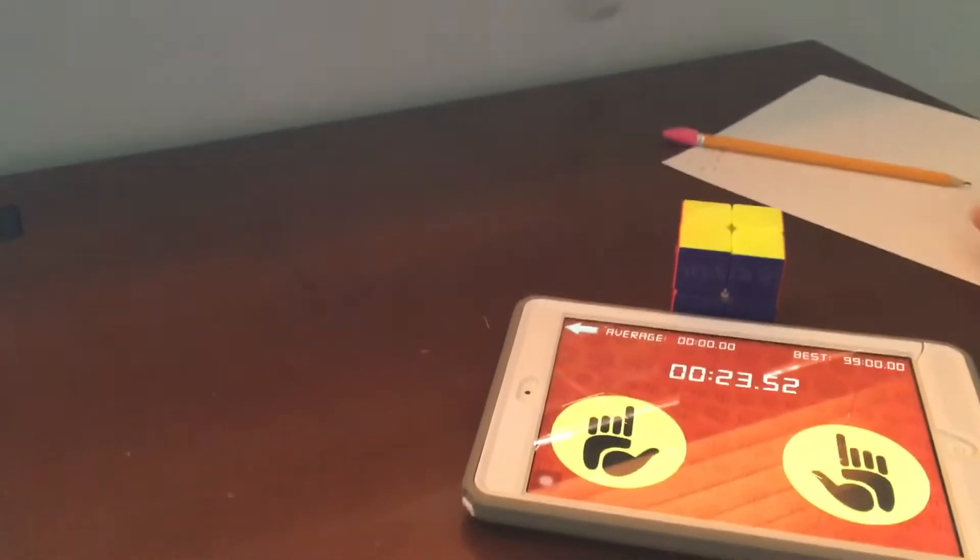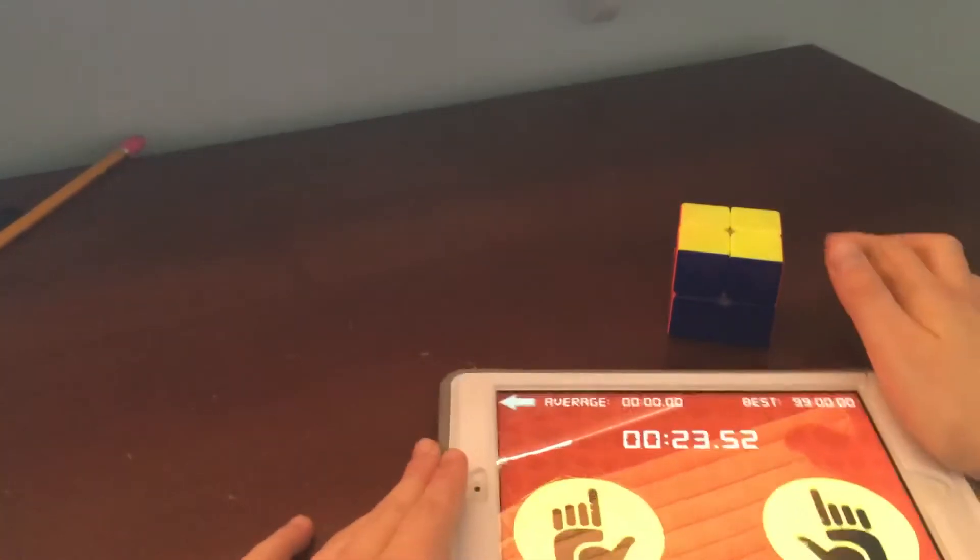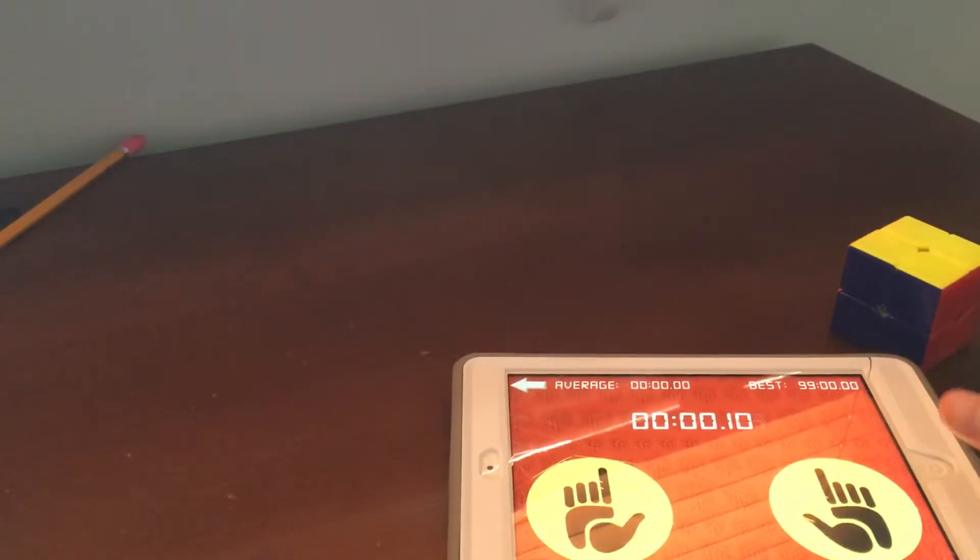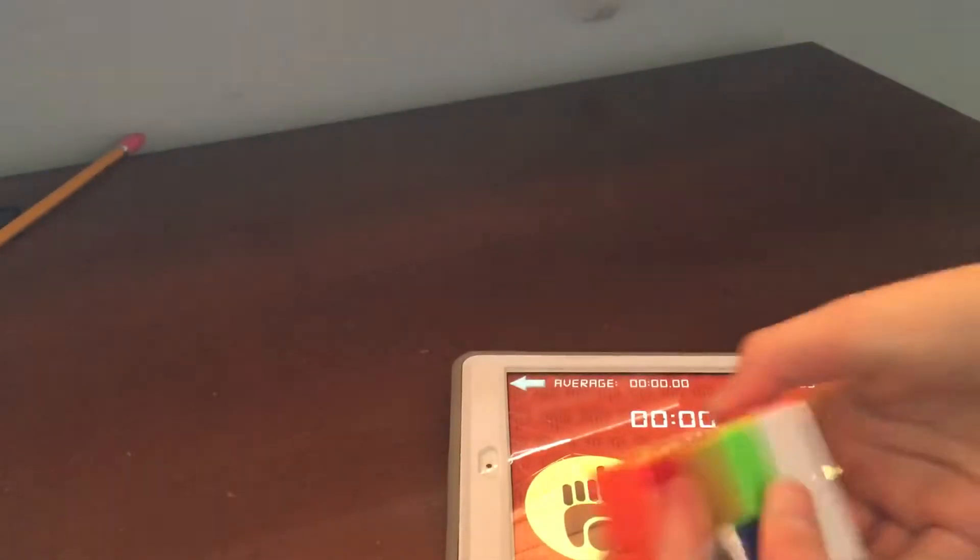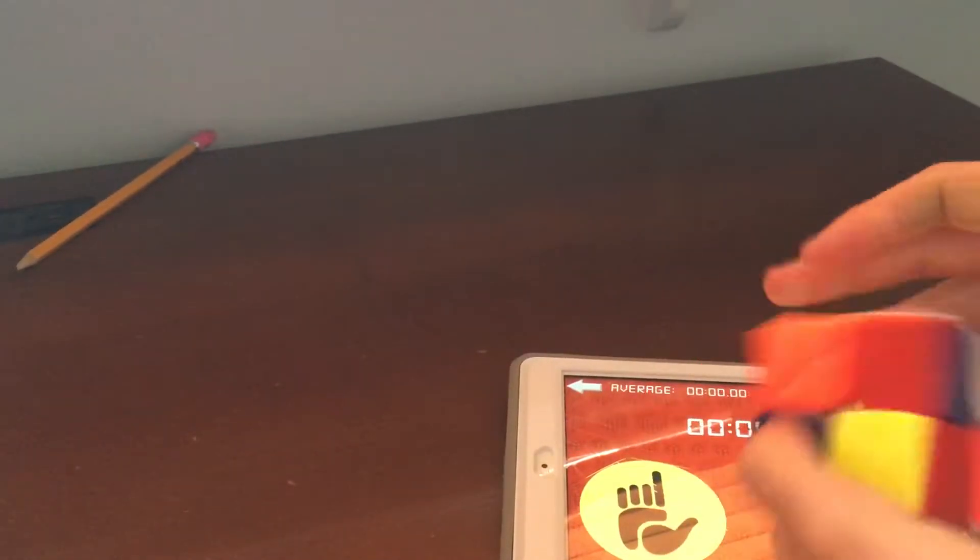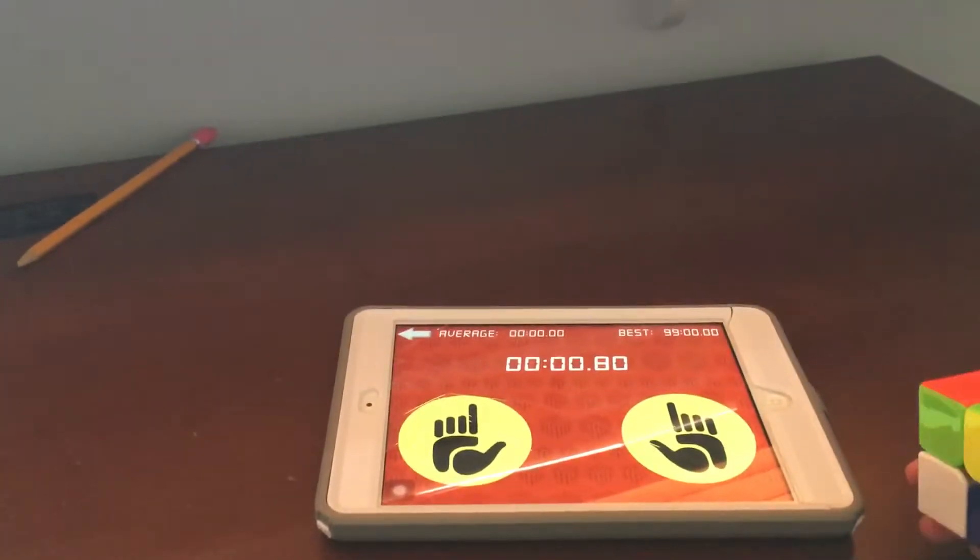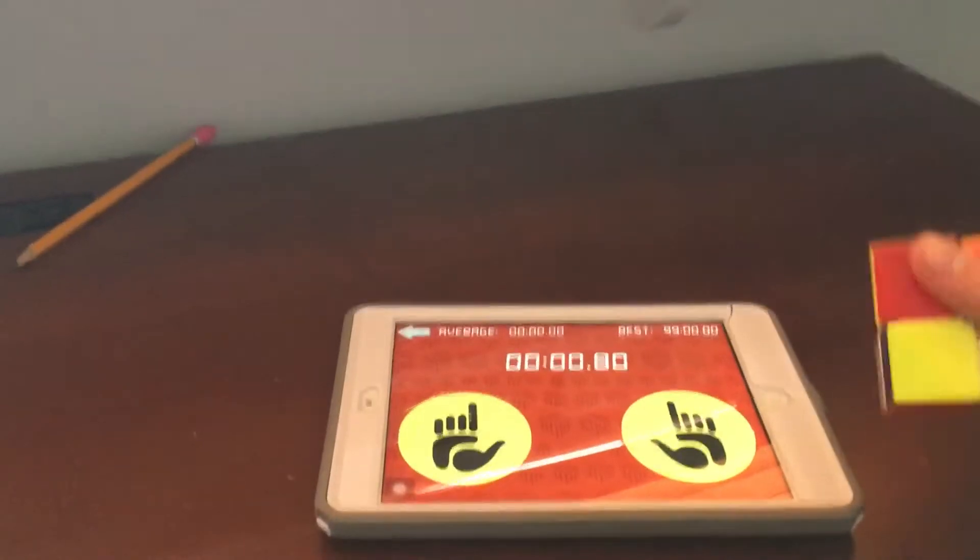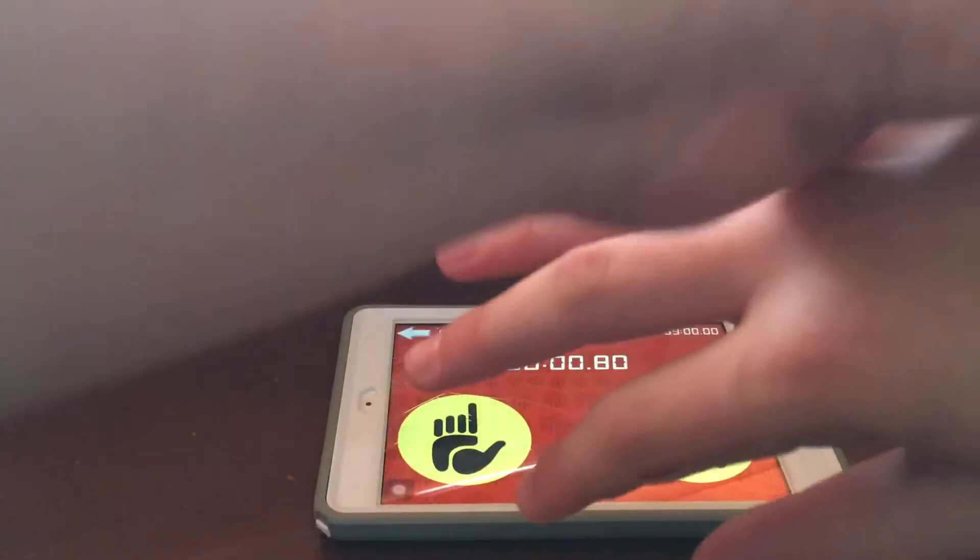Okay, I don't know how I'm going to set this up. Maybe I'll do it, I don't know. I'll do it right here. That will work. Okay, it's kind of hard to do with the paper. Okay, next solve. Inspection time starts now.